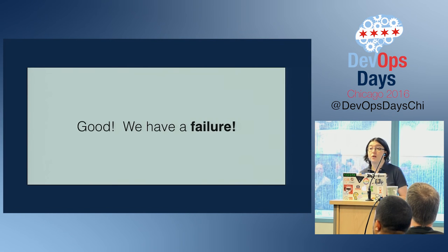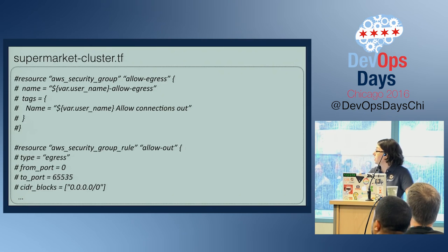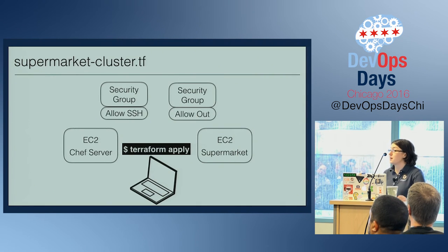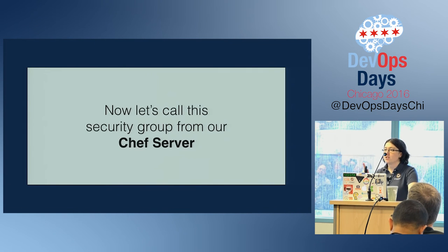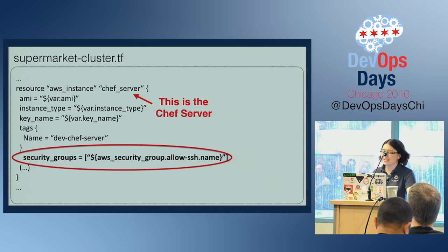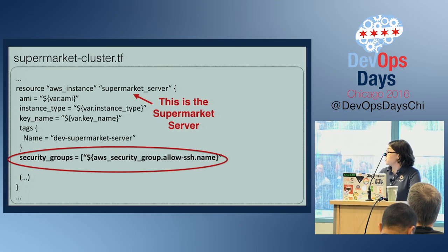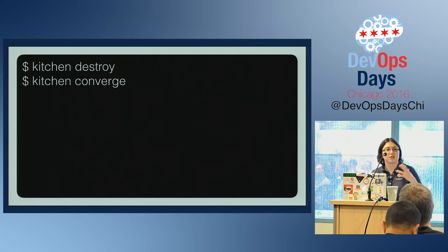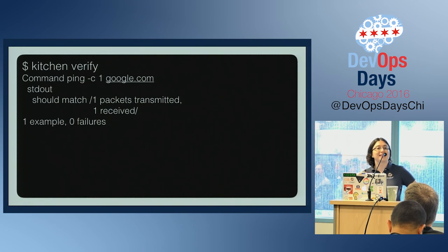Let's make the test pass by uncommenting the allow egress security group and its security group rule. We change the Chef server and supermarket server resources back to using both security groups. We run kitchen destroy, kitchen converge, then kitchen verify. This time the test passes. Now this section of code — the second security group — is covered by tests, and we can make a change confidently.